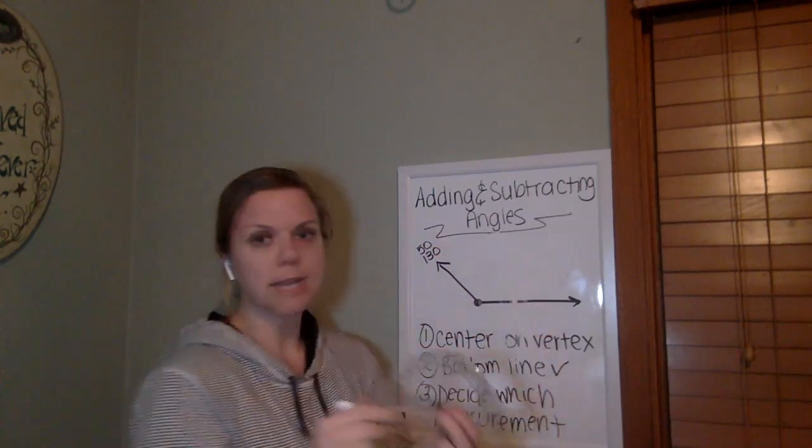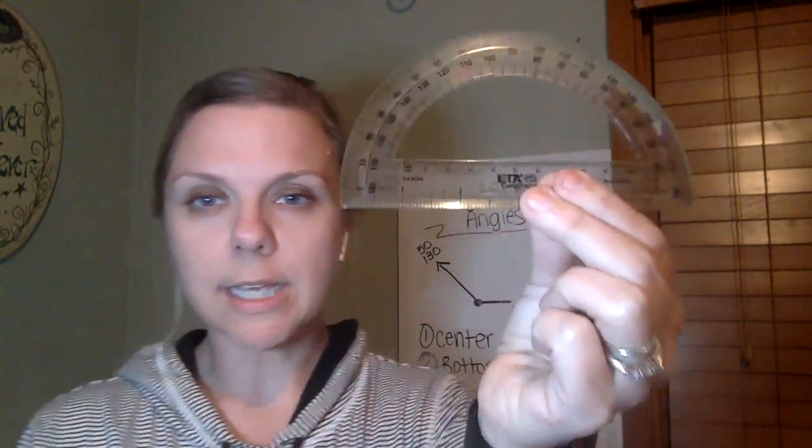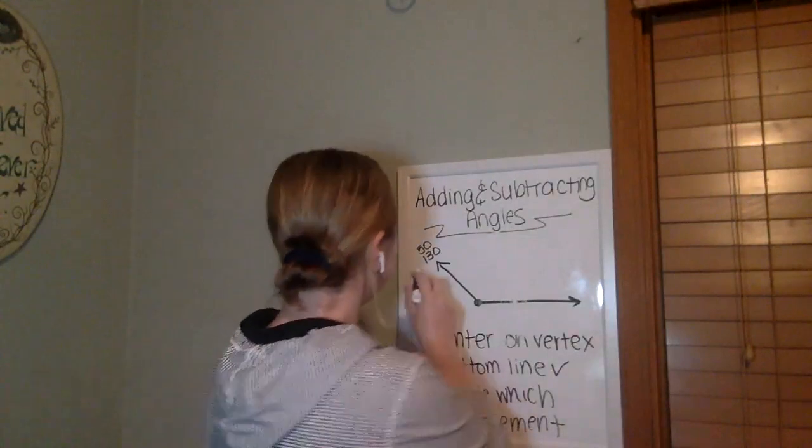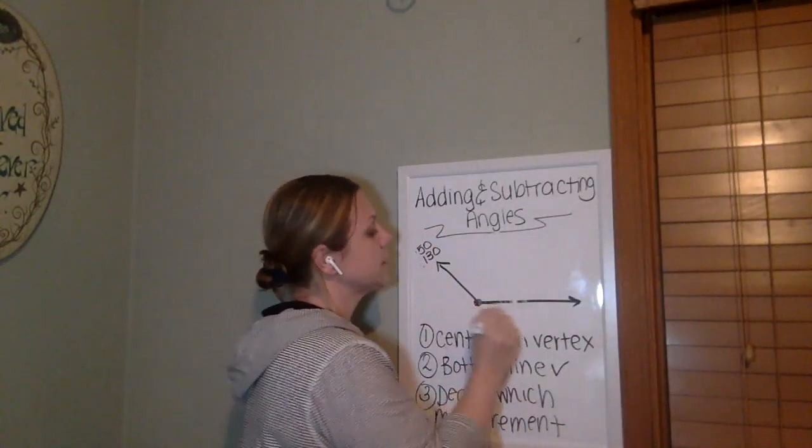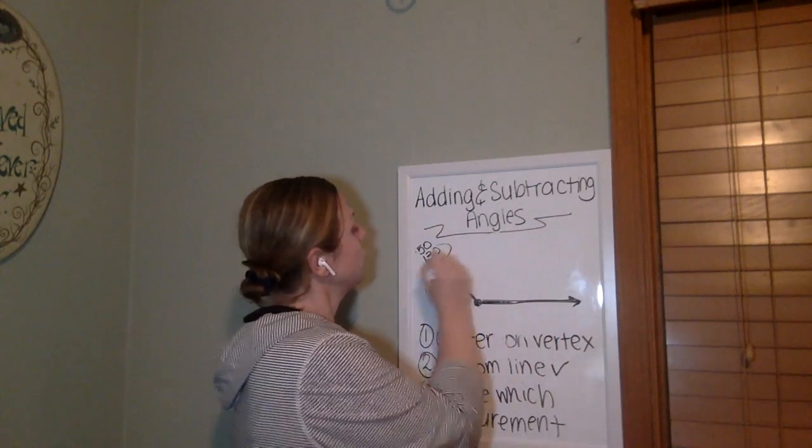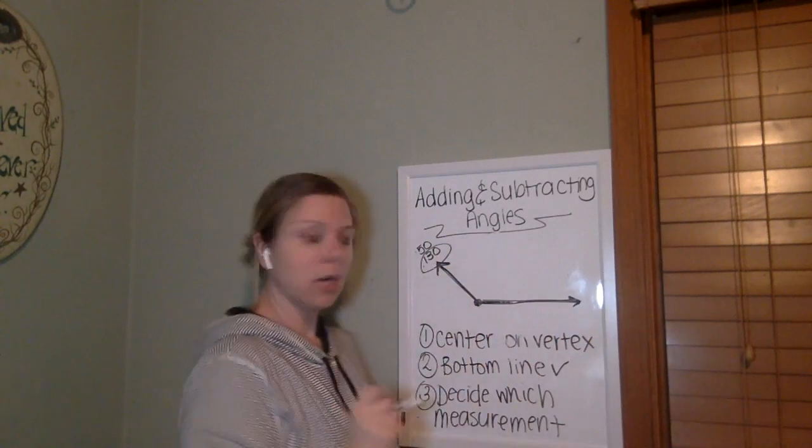So now I need to decide. I'm going to come a little closer, see if you can see it. See how there's two numbers there. So now I need to decide which do I take, the 50 or the 130? Is this acute or obtuse? It is obtuse. So I would definitely take the 130 degree measurement here.